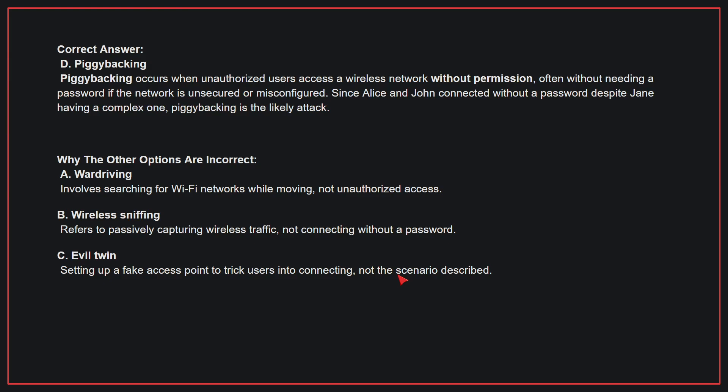Why the other options are incorrect: A, war driving — this involves searching for Wi-Fi networks while moving, not unauthorized access. B, wireless sniffing — this refers to passively capturing wireless traffic, not connecting without a password. C, evil twin — this refers to setting up a fake access point to trick users into connecting, not the scenario described. Therefore, the correct answer is D.